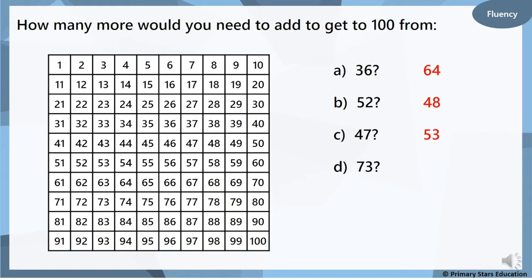Now 73. Find your finger all the way down to the 73. Do your tens going down and then your ones going across. 27. If you said that you got it right. Well done.